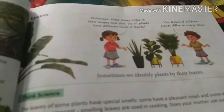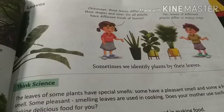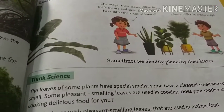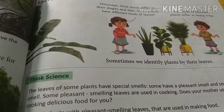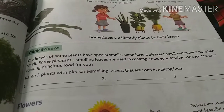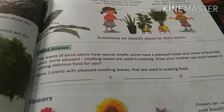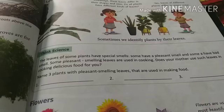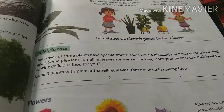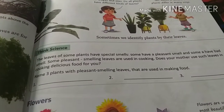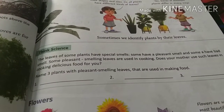Now, looking at leaves — different plants have different types of leaves. You have seen the leaf of a neem tree, banana tree, and cactus. The leaves of some plants have a special smell. For example, tulsi has a good smell, curry plant has a good smell, and coriander — which means dhania — also has a good smell.